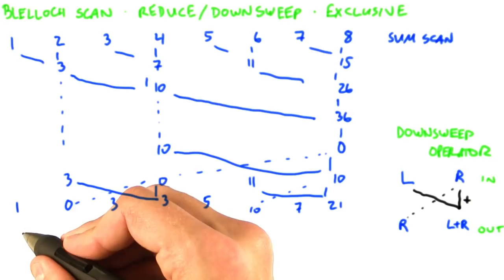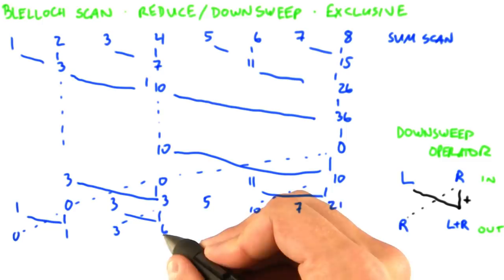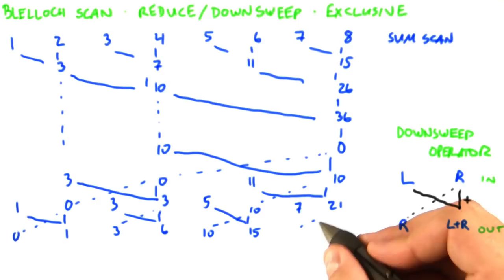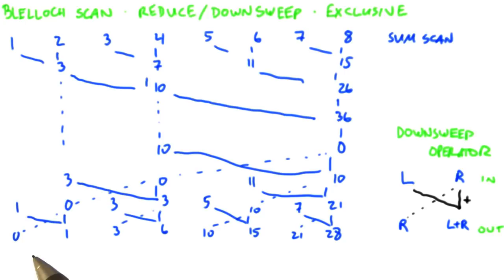0, 0 plus 1 is 1, copy the 3, 3 and 3 make 6, copy the 10, 10 and 5 makes 15, copy the 21, 7 and 21 make 28. So now our output sequence is 0, 1, 3, 6, 10, 15, 21, 28, which is the exclusive sum scan of the input of the vector from 1 to 8.